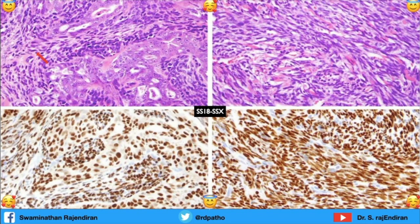Synovial sarcoma — you can see epithelioid cells as well as spindled cells. This is monophasic spindle cell synovial sarcoma, while this one is biphasic epithelial and spindle cell synovial sarcoma. The very specific nuclear marker is SS18-SSX. It's easy to remember: the translocation is t(X;18), so the protein products are SS18 and SSX — that's why the marker is called SS18-SSX.